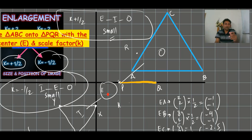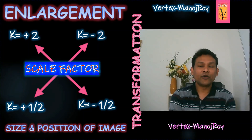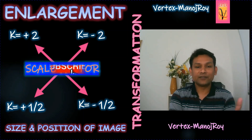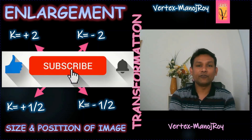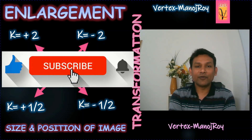When K is minus one-half, the object is on the right-hand side, the image is on the opposite side, and the size is small. We should know: when K is positive two or minus two the image is larger; when K is positive one-half or minus one-half, the image is smaller. We have completed the topic of enlargement, and the next topic will be how to describe this transformation. If you found this video useful, please like, share, subscribe, and press the bell icon. Thank you and have a nice day.